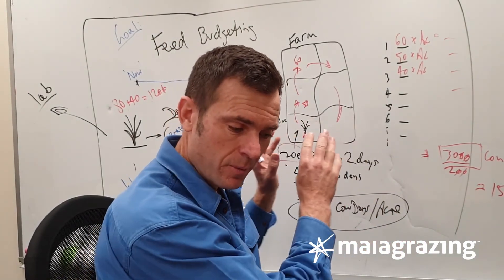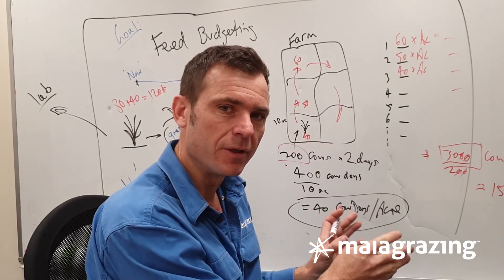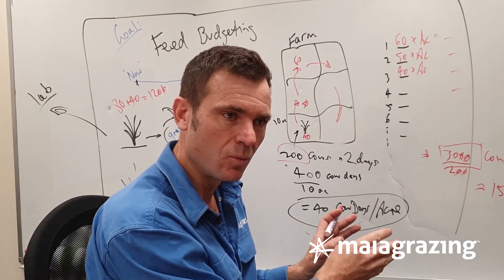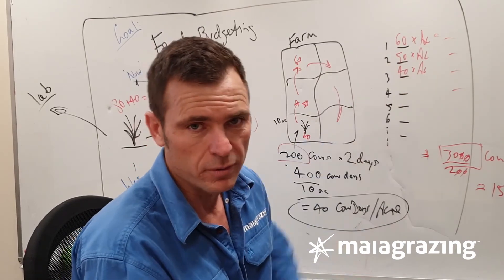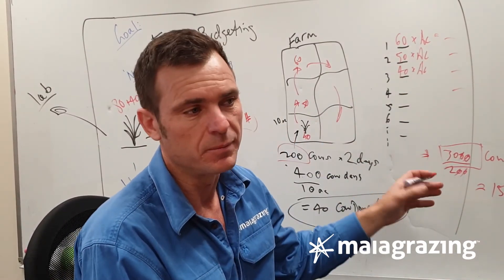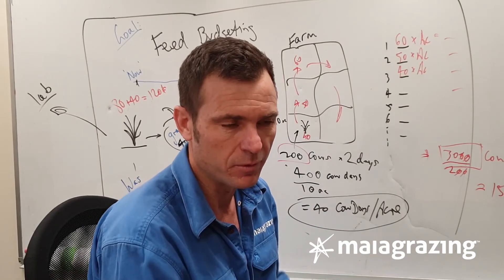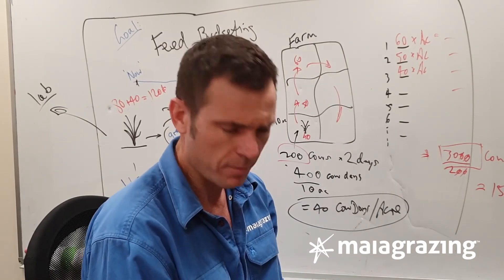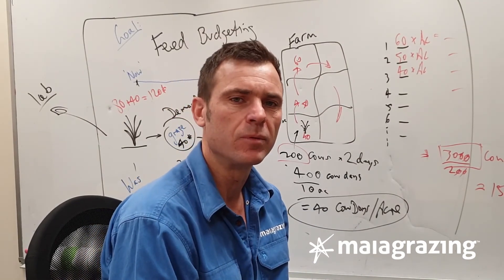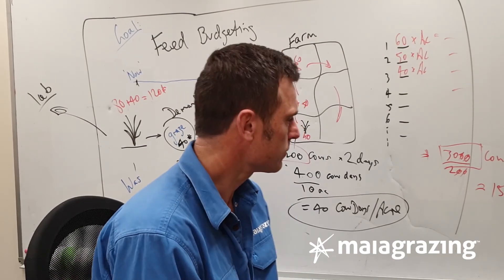But you get the principle. So we get the total, we come up with a way of estimating feed per acre. We can then look at feed across all acres, across the farm, divided by our demand, which is the total number of cows we've got, and how long that will last before we run out of feed.